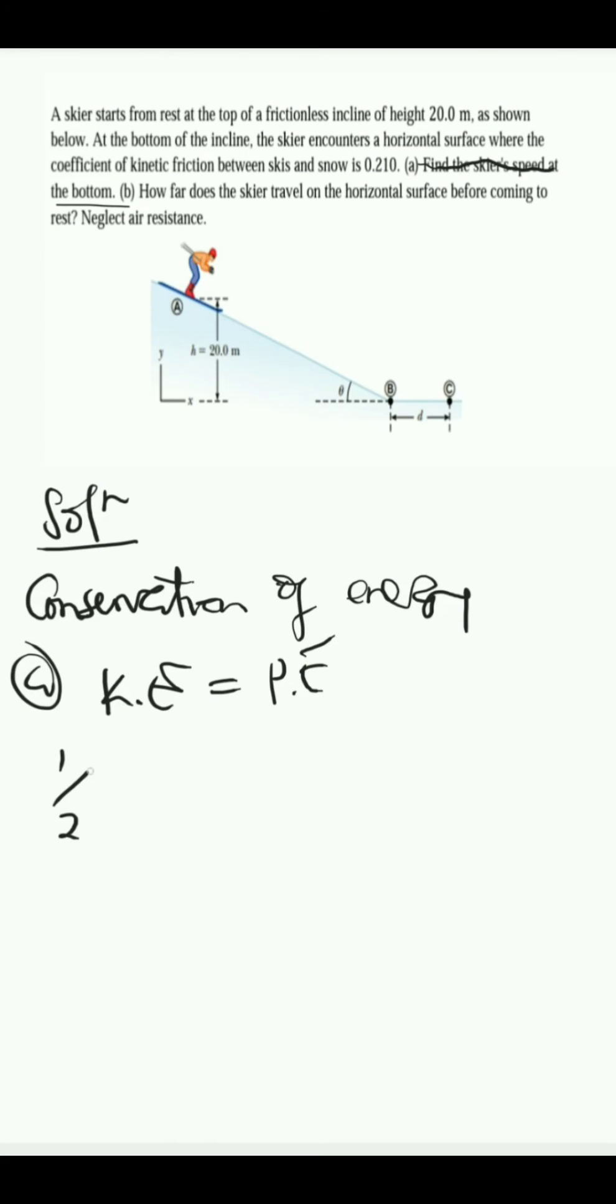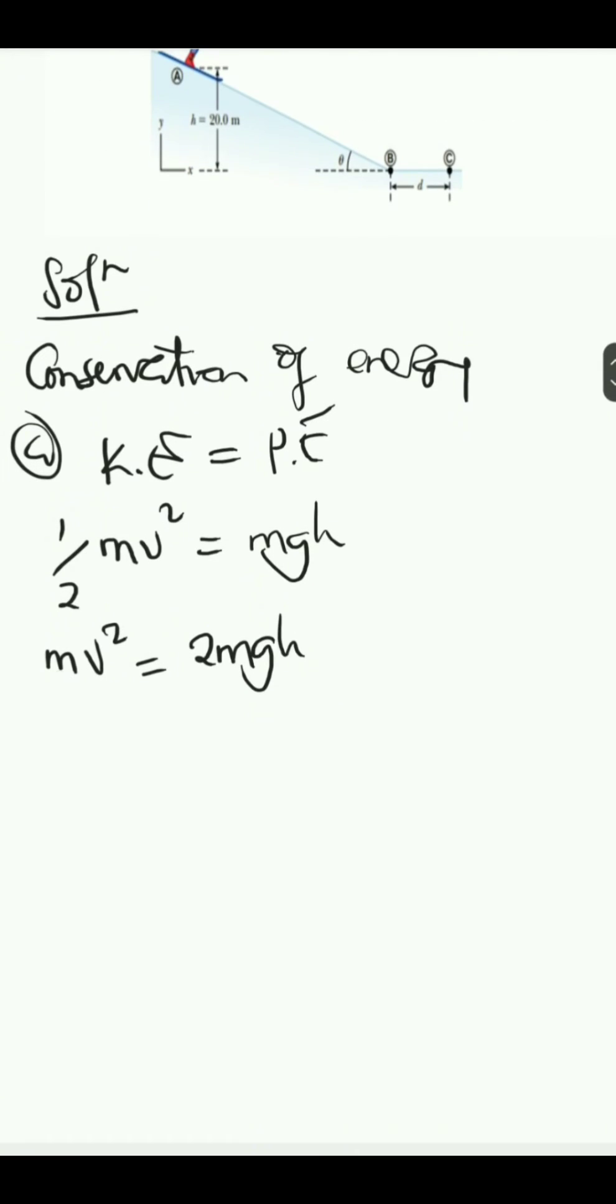The kinetic energy is half mv squared, which is equal to the potential energy, which is mgh. Then, upon cross multiplication, we get mv squared to be equal to 2mgh. Then we divide both sides by m, leaving us with v squared to be equal to - the m will cancel out to get 2gh. Then square root both sides to remain with v. So this will give us square root of 2 times gh.